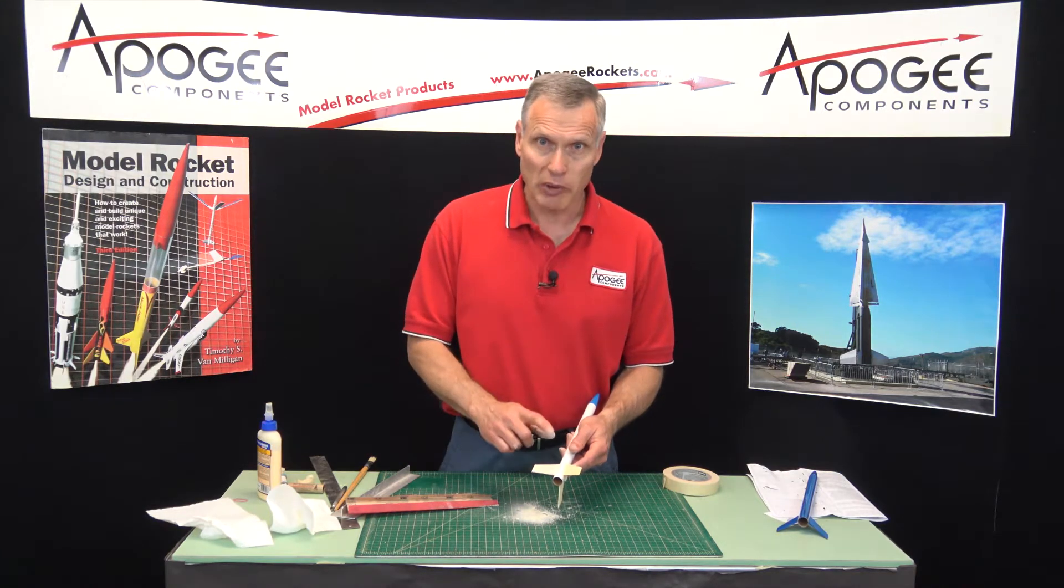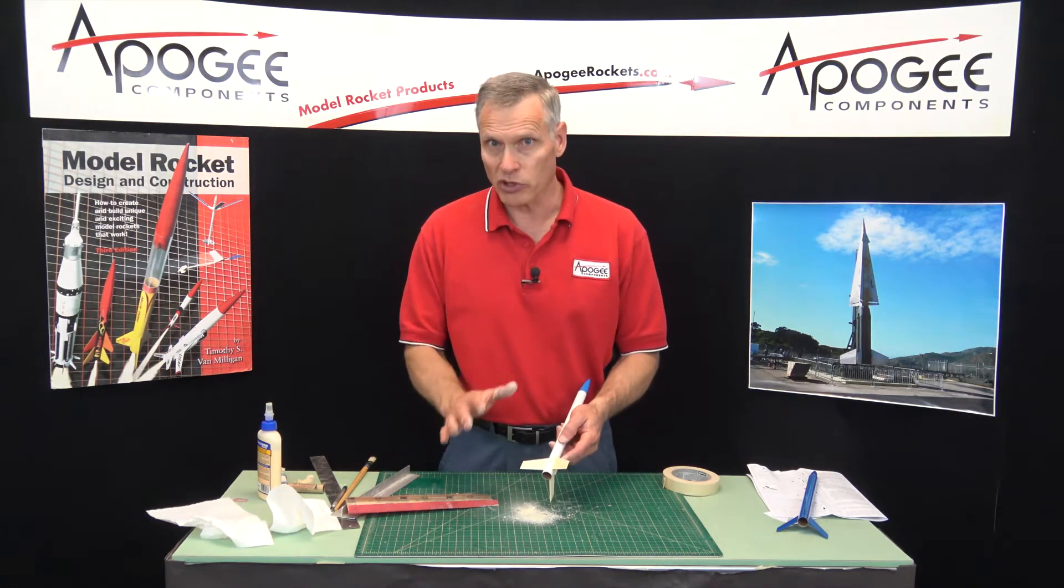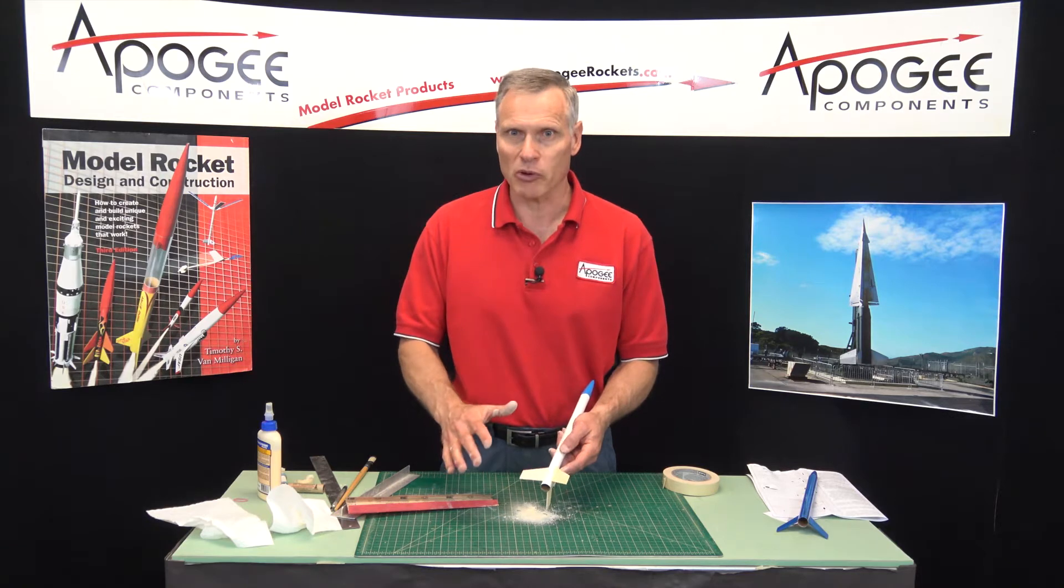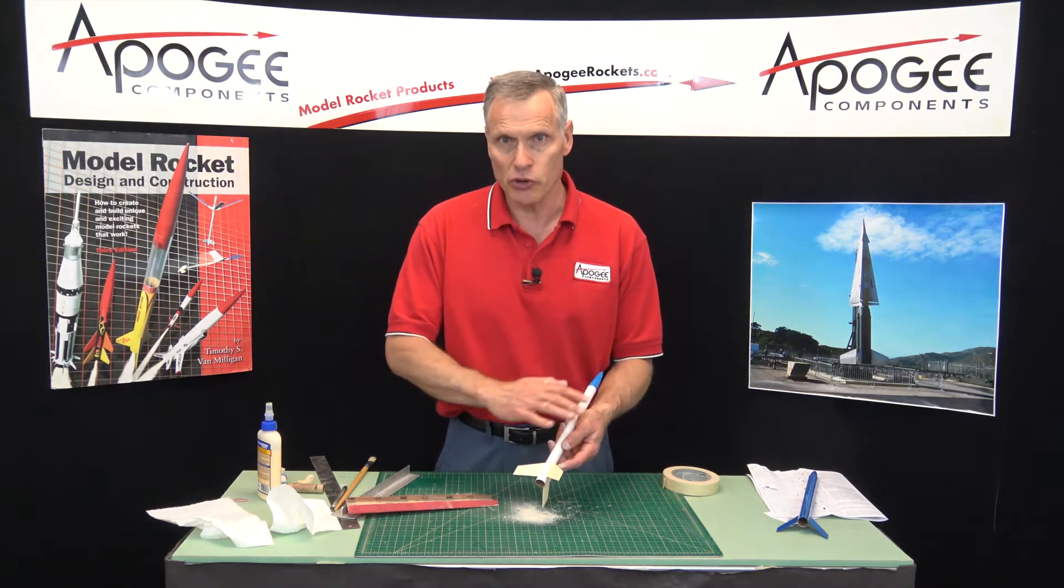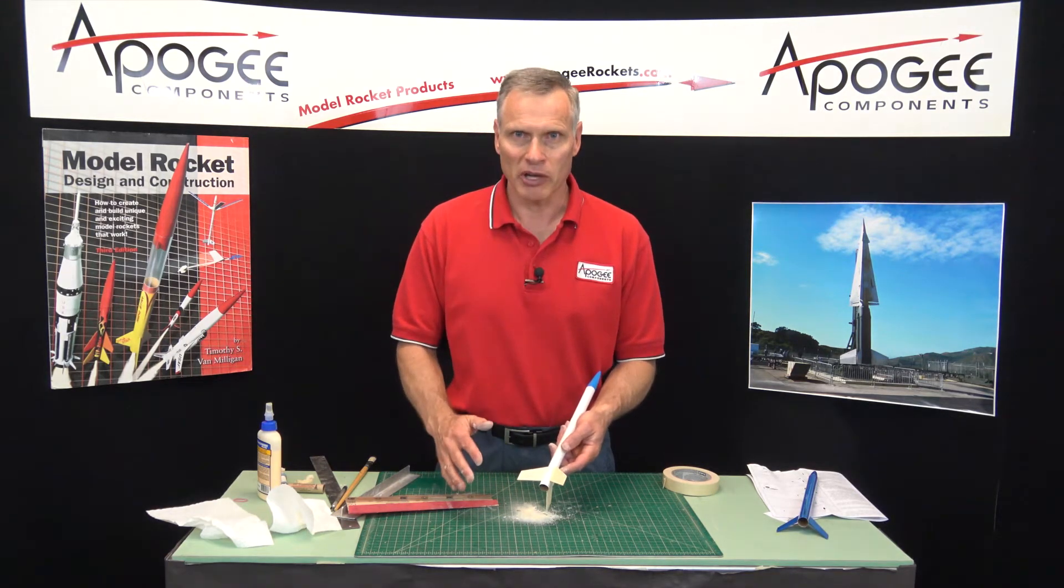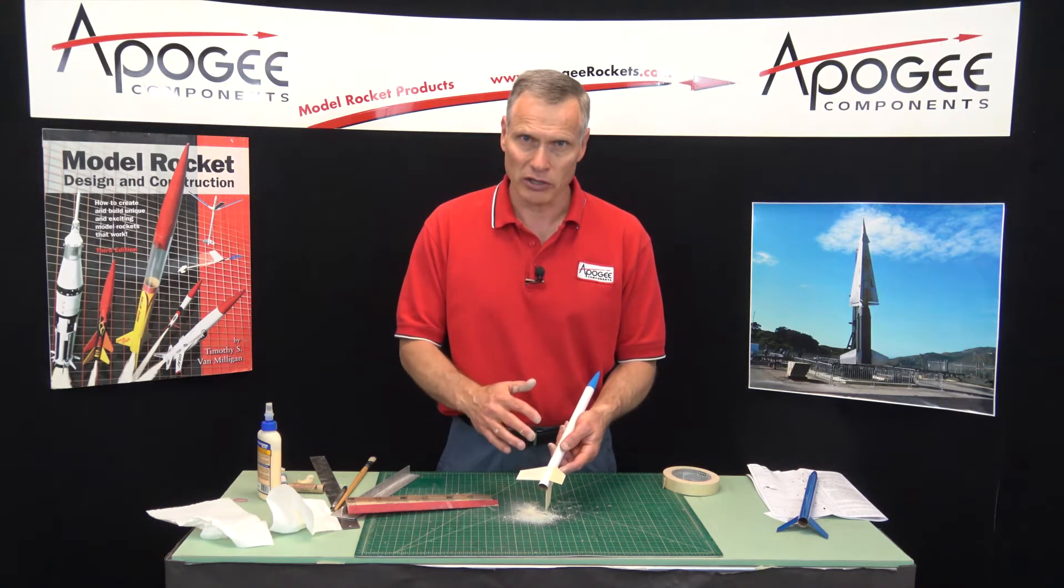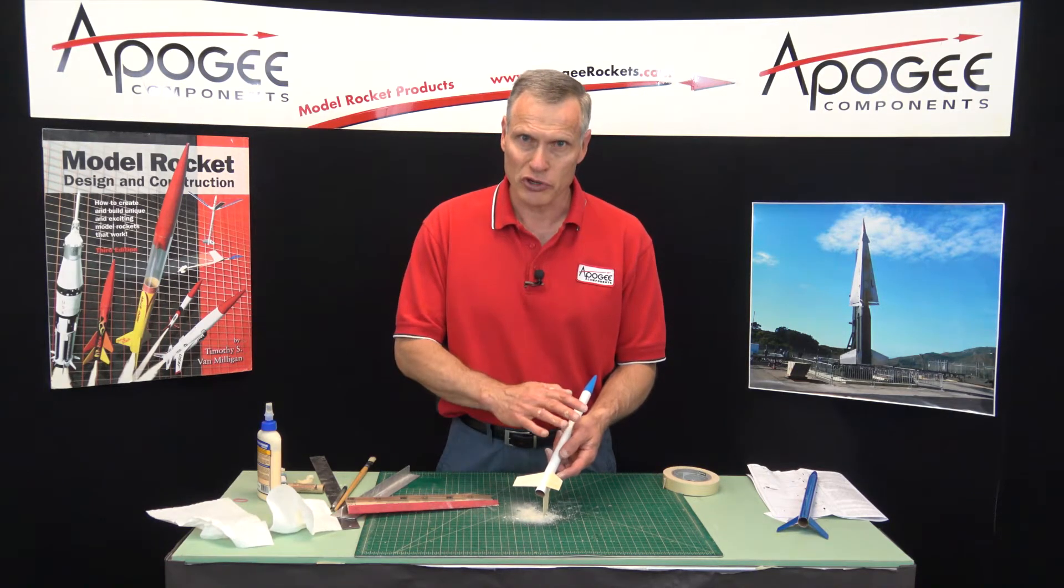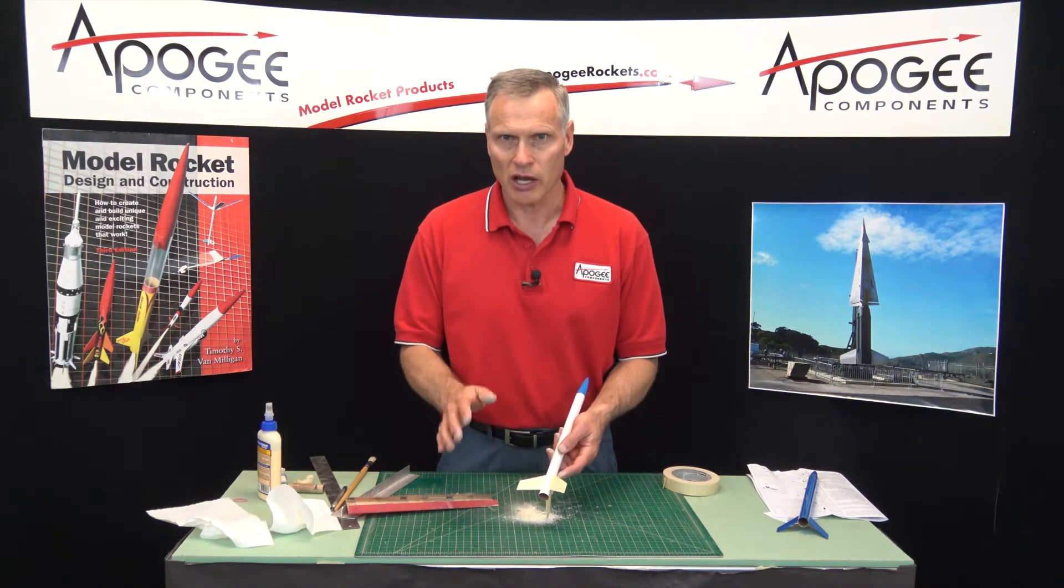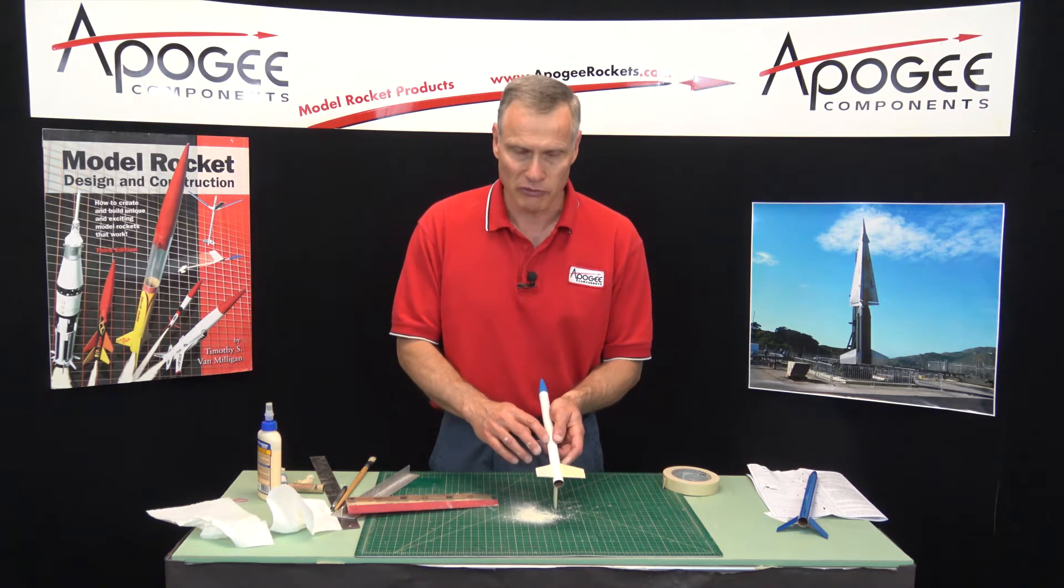And the next step would be to paint the rocket. I would go with a primer first. A primer will get everything a nice uniform color. And then if you're going to paint it a light color, do those first before you do the darker colors. I'm not going to cover the painting in this series. We do have other videos on painting rockets.